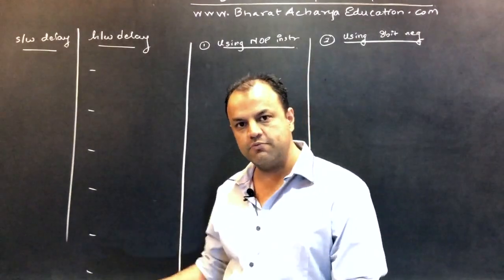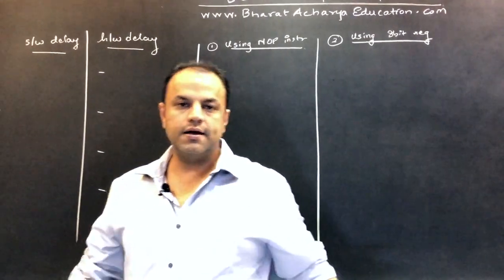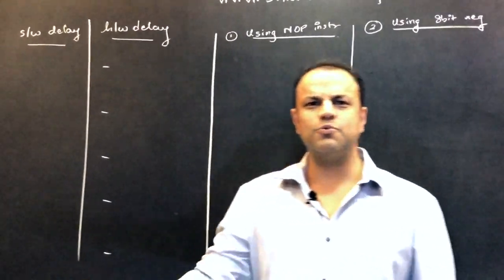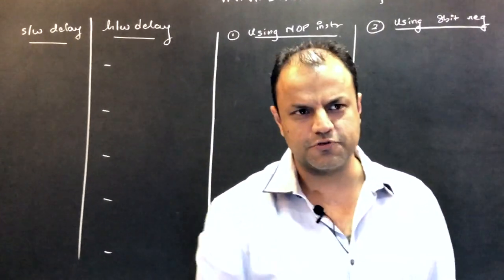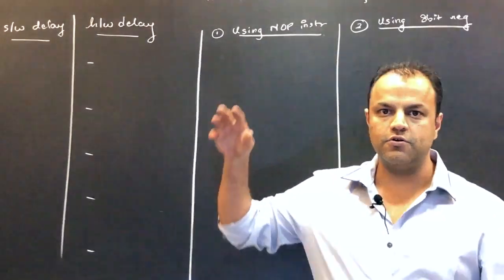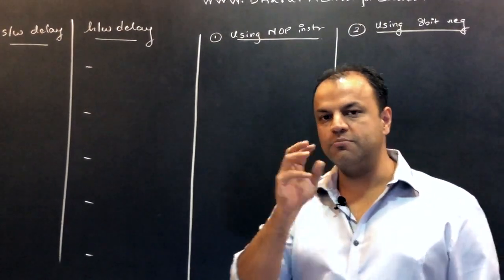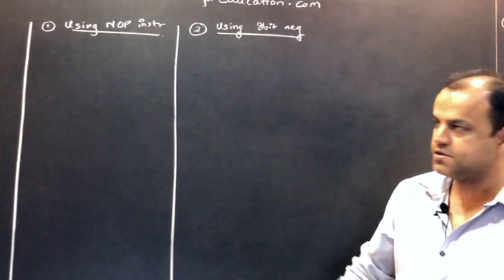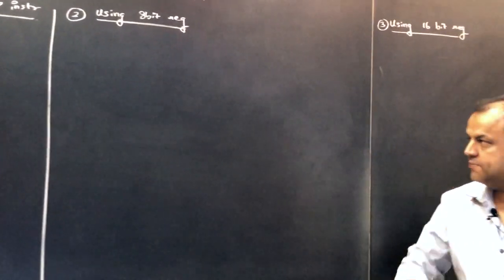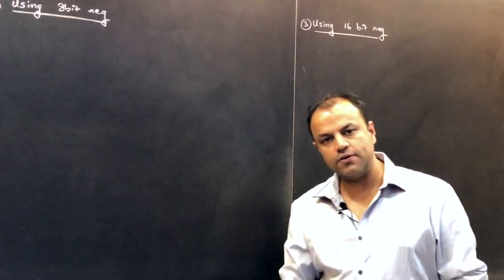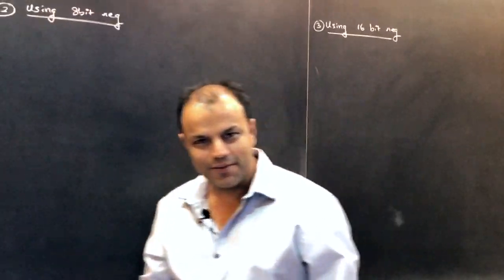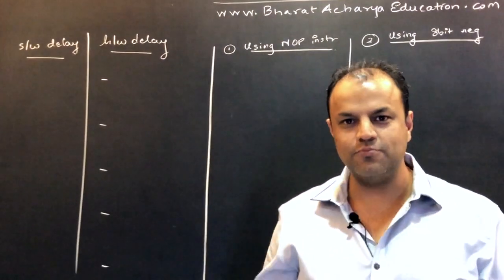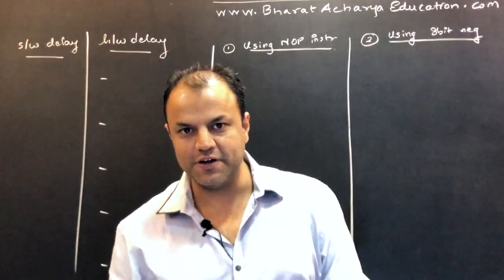First, I'm going to give you the distinction between a software and a hardware delay — it comes in Bombay University as a 5-mark question. Then we're going to get into delay routines. What do you mean by delay routines? Software delays. There are various ways of producing a delay: using no operation instruction, using an 8-bit register, using a 16-bit register.